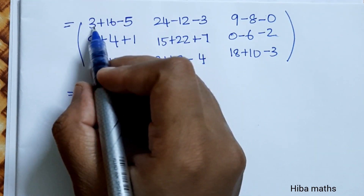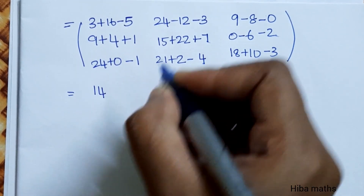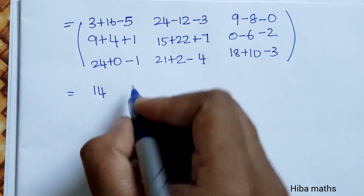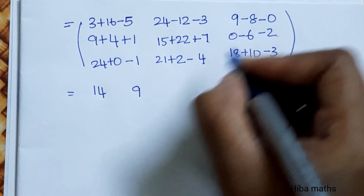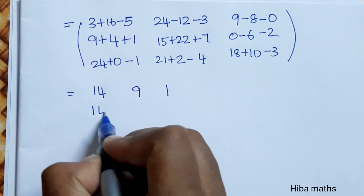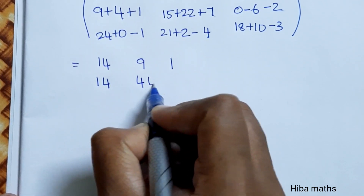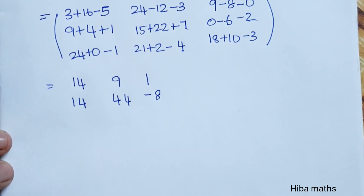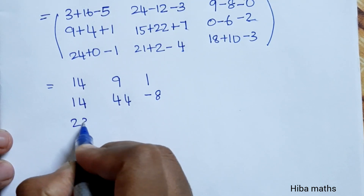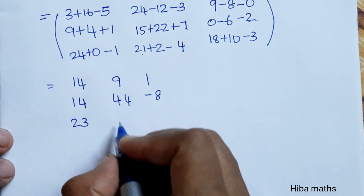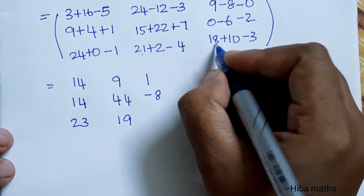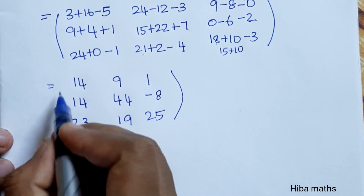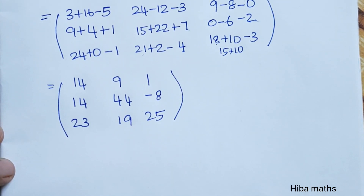Now solving the final arithmetic: 16 plus 3 is 19, 19 minus 5 is 14. 24 minus 12 is 12, 12 minus 3 is 9, 9 minus 8 is 1. 10 plus 4 is 14, giving 44. Minus 6 is minus 2 minus 8. 24 minus 1 is 23, 21 plus 2 is 23, 23 minus 4 is 19. 18 minus 3 is 15, 15 plus 10 is 25. This is the answer for part 1.